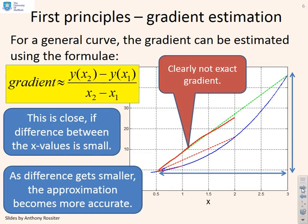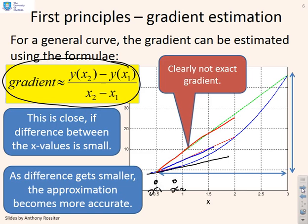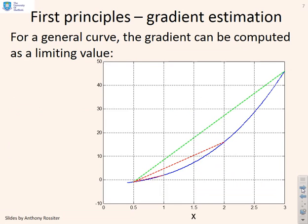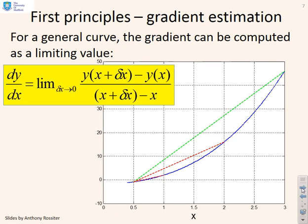A slightly smaller difference in the x values is getting closer, and smaller still it gets closer, and the true gradient at this point is something like the black line. So what we can see is: the closer together we make x1 and x2, the more precise this formula becomes. For a general curve the gradient can therefore be computed as a limiting value.